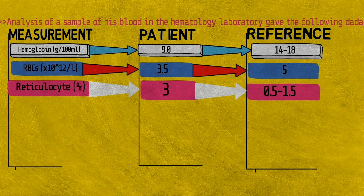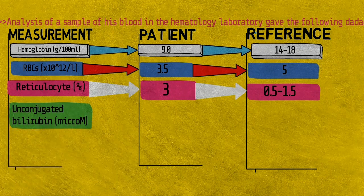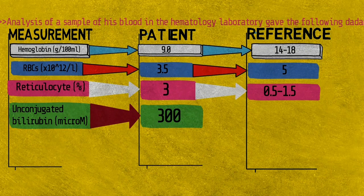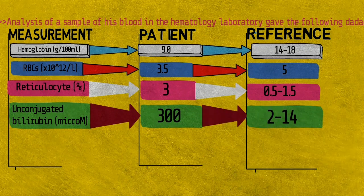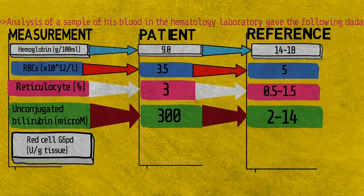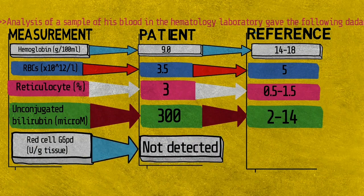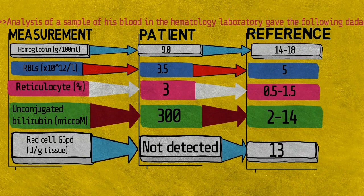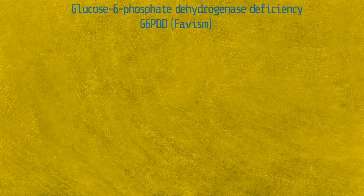Reticulocytes are immature red blood cells without a nucleus, having a granular or reticulated appearance. Unconjugated bilirubin was 300 (reference: 2–14) — very elevated. Unconjugated bilirubin is simply a waste product of hemoglobin breakdown taken up by the liver. Red cell glucose-6-phosphate dehydrogenase was not detected (reference: 30). The diagnosis was Favism due to glucose-6-phosphate dehydrogenase deficiency.